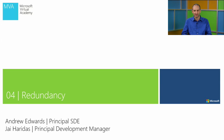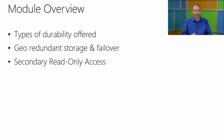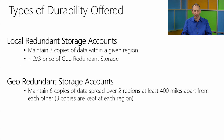Now we're going to talk about redundancy and how we ensure enough copies of your data exist worldwide to make it always available. We'll cover the different types of durability we offer, geo redundancy and failover, and our newer preview feature: read-only access to the secondary copy when you have geo-redundant storage.